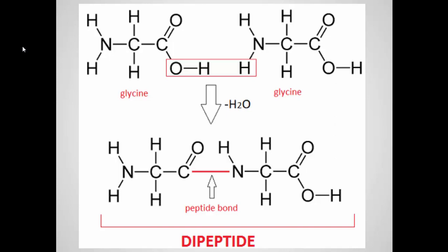This would be called a dipeptide because there's two of them. Repeat this process hundreds or thousands of times and we would form a polypeptide — a protein.